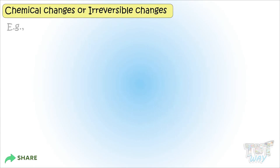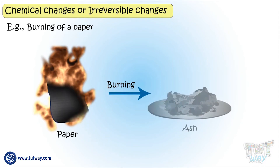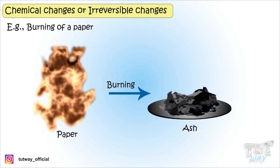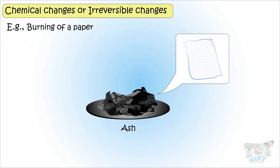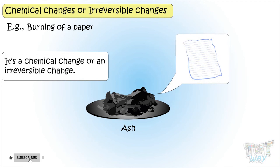Let's see some examples. Burning a paper: if a piece of paper is burnt, it changes to ash — that is, some new type of matter is formed, which is ash, and it looks entirely different from the original matter, which is paper. This change cannot be reversed — ash cannot be changed back into paper. So it's a chemical change or an irreversible change.